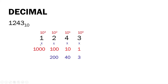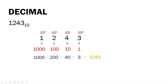To get the sum, we add: 1000 plus 200 is 1200, plus 40 is 1240, plus 3 is equal to 1243. So we still get the same value, 1243, by using the increasing powers of ten.